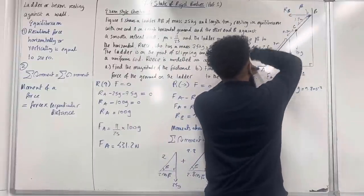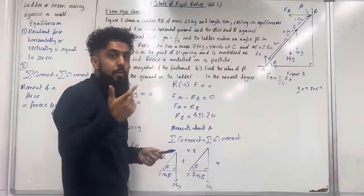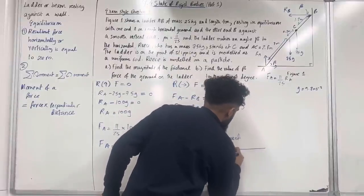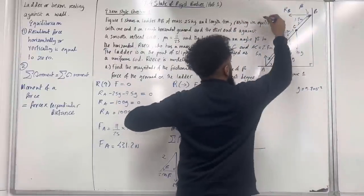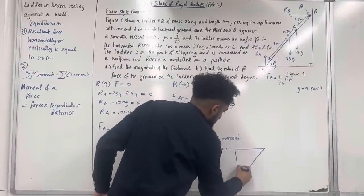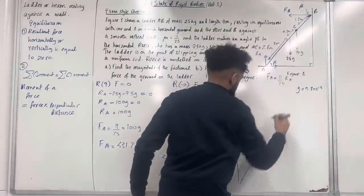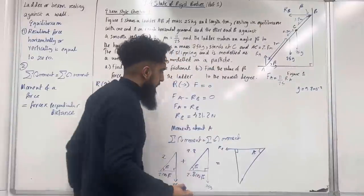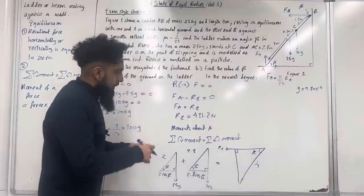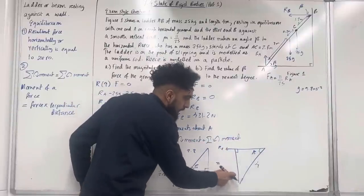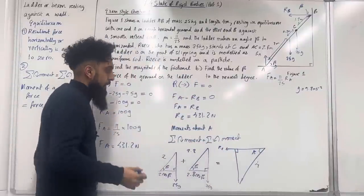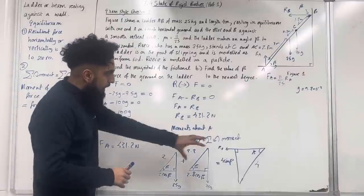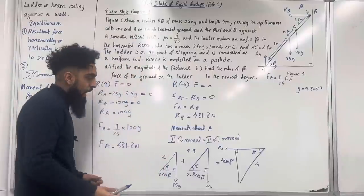The R_B force produces the anticlockwise moment. Drawing the triangle: the whole length of the ladder is 4 metres, the angle is beta, and we have a right angle. The perpendicular distance to R_B is the opposite side, which is 4 sin β. So the anticlockwise moment is R_B × 4 sin β. That is the only anticlockwise moment.